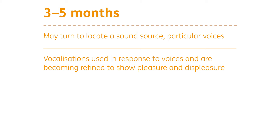Between three and five months, a child starts to refine their listening skills so that they can locate a sound source — the sound of a rattle or a particular voice they may turn to. They may start to use vocalisations in response to someone else speaking, which is really early two-way communication developing. These vocalisations become more refined so you can tell a happy sound showing pleasure versus a sound that's starting to denote some distress.